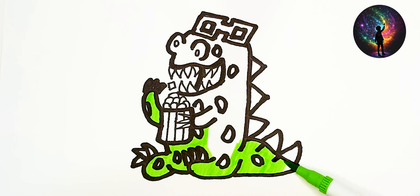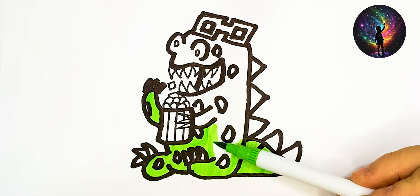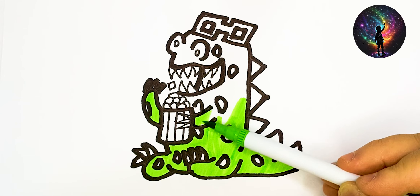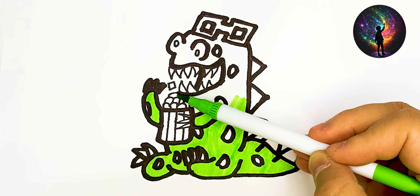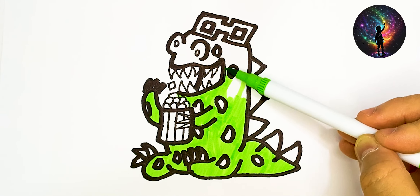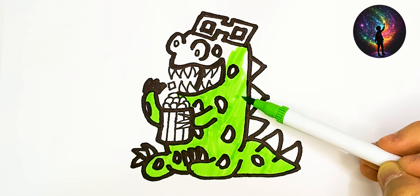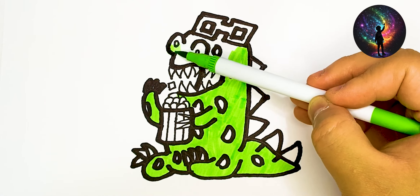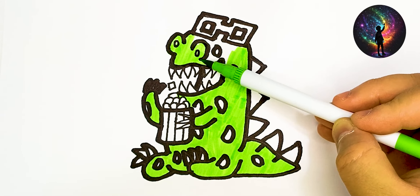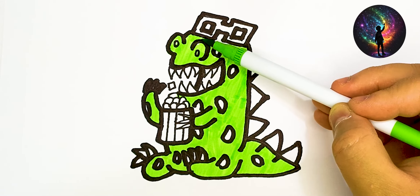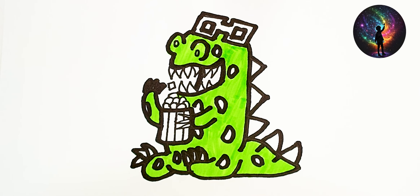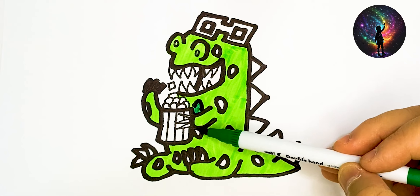E-I-E-I-O. Old MacDonald had a farm, E-I-E-I-O. And on his farm he had a pig, E-I-E-I-O. With a here and a there, here, there, everywhere. Old MacDonald had a farm, E-I-E-I-O.